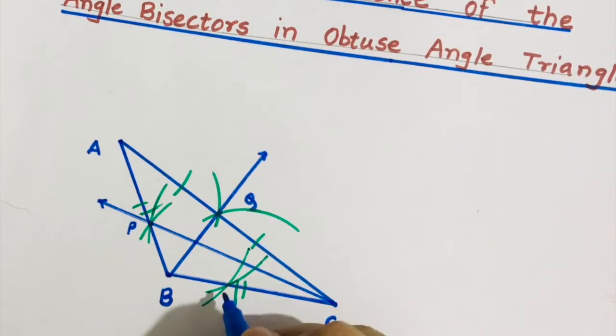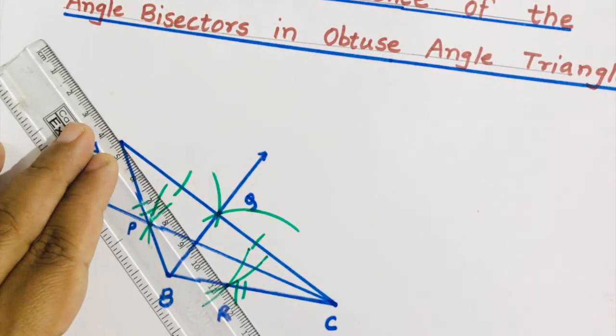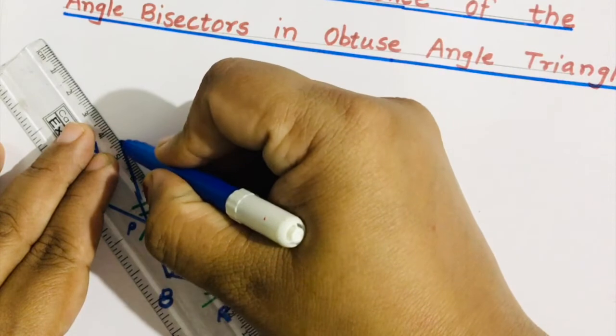You can name this point as R. Join AR distance. Draw a ray.